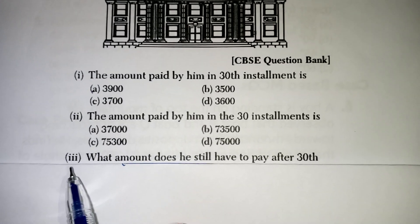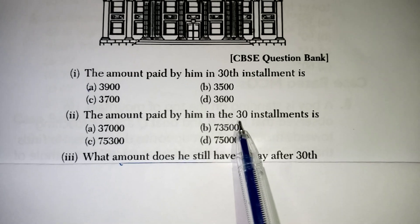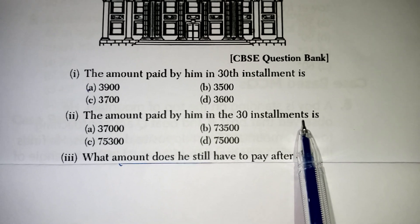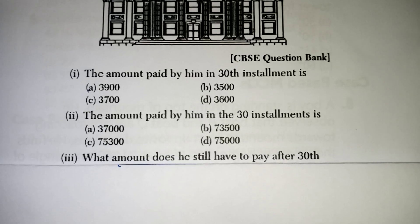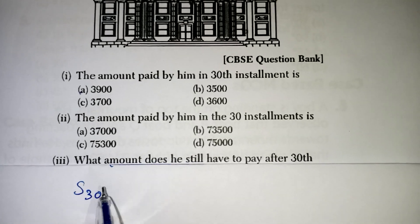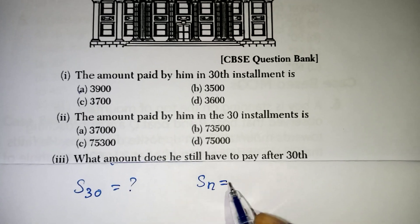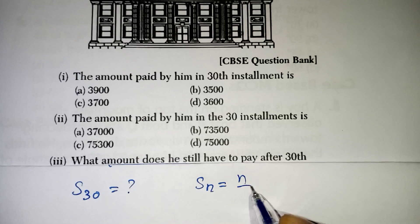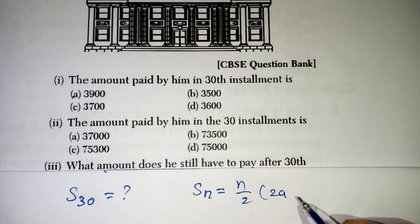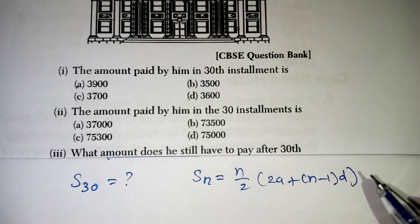Look at the next question. The amount paid by him in the 30 installments. So, together in 30 installments what is the total amount paid by him they are asking. So, they are asking you to find out S30. S30 is a question mark. So, we should go for SN formula. SN is N by 2, 2A plus N minus 1 into D is your formula.